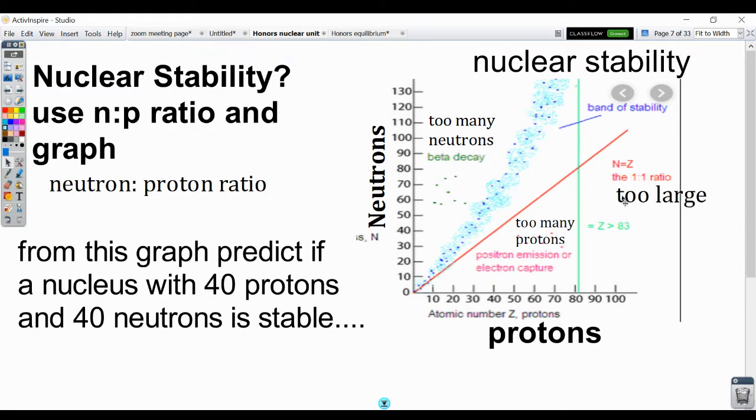If my nucleus is over an atomic number or 83 protons, then it is always going to be radioactive because it is just too large for it to be stable and overcome all of those positives that need to repel one another.